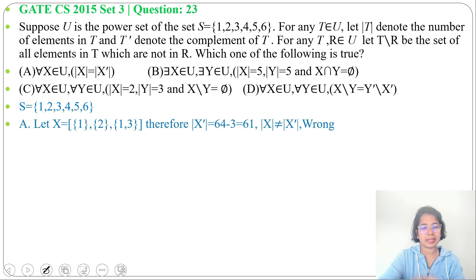Let X contain {1, 2, 1, 3}. So, here |X| equals 3. Then |X'| will be 64 minus 3, it's 61. Here, |X| is not equal to |X'|. It's wrong.